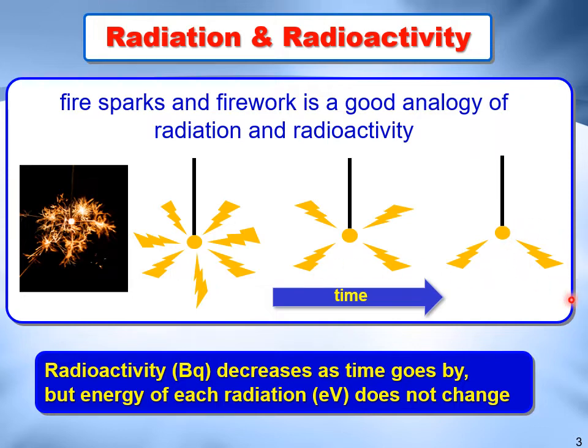In the same way, radioactivity decreases as time goes by, but the energy of each radiation does not change. For example, a check source of caesium-137 with 100 becquerel becomes one with 50 becquerel roughly 30 years later, but the energy of gamma rays emitted from the check source is still 662 keV.